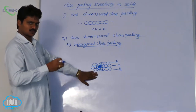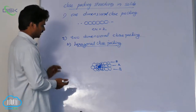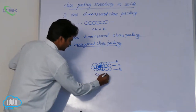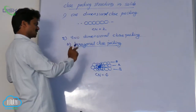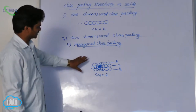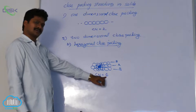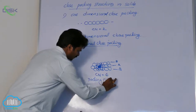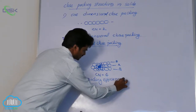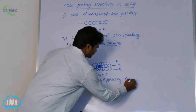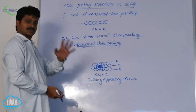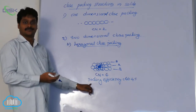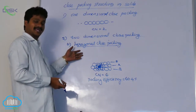This is two dimensional hexagonal close packing. In this, what is the coordination number? Coordination number is six, because any sphere in this arrangement is in contact with six other spheres. The packing efficiency — meaning occupied volume — in this packing efficiency is 60.4%. In square close packing, packing efficiency is only 52.4%.